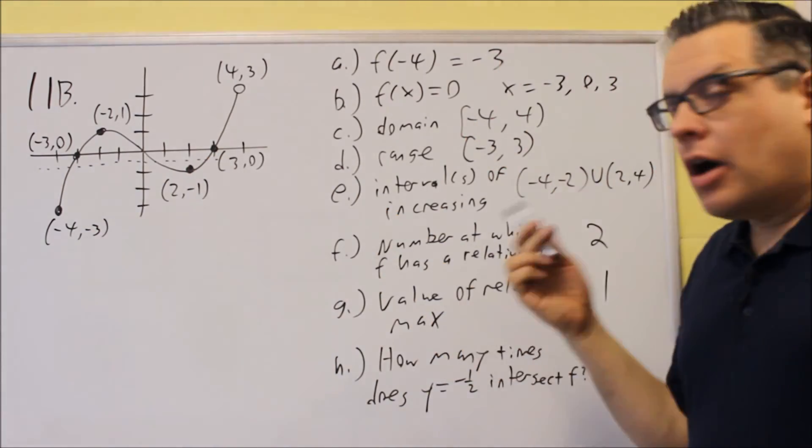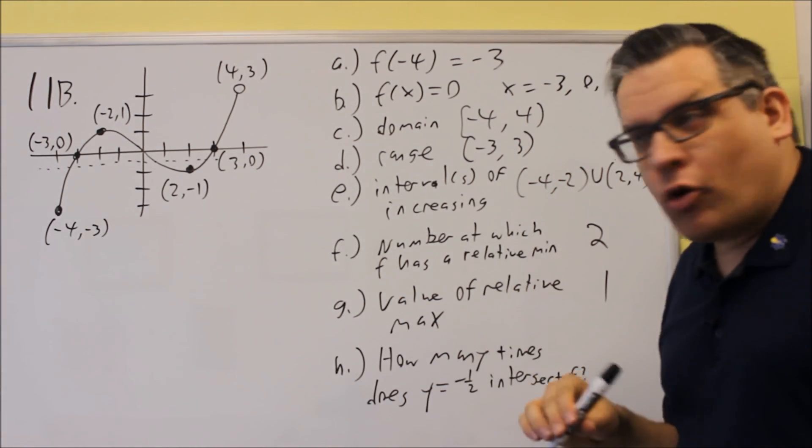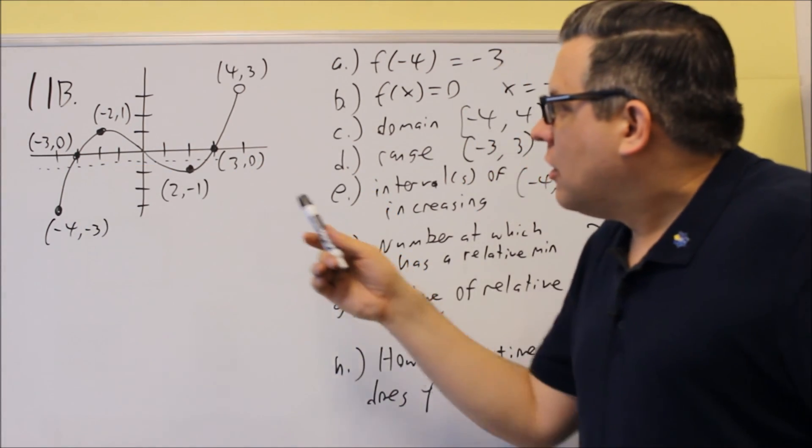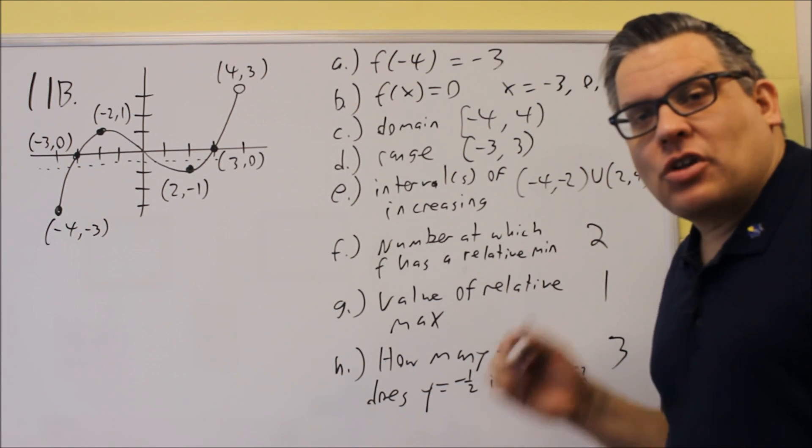This one, this one, and this one. -1/2 is like -0.5, so that's where I put that in there. And so I would put 3 times, and that answers this question.